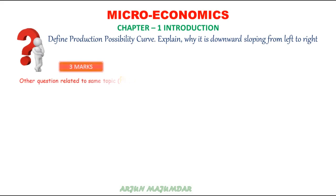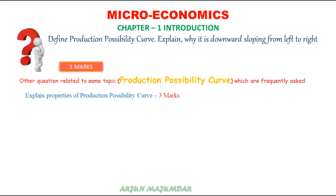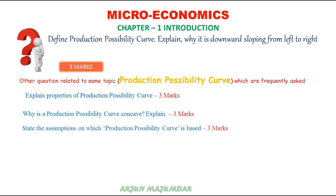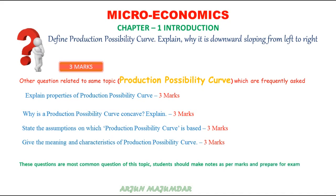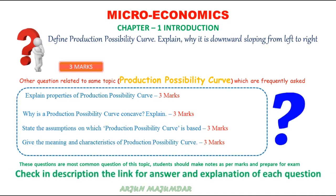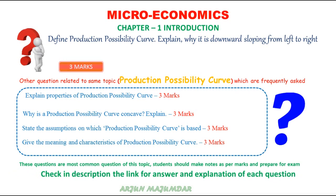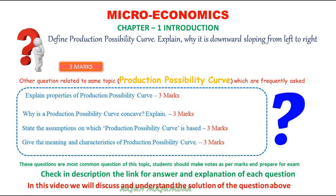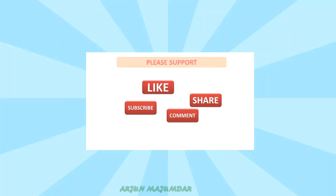Hello everyone, I'm back with one more important question on the production possibility curve. The question is: define the production possibility curve and explain why it is downward sloping from left to right. There are other important questions you can check in the description. In this video we are going to understand and define the production possibility curve and explain why it is downward sloping.